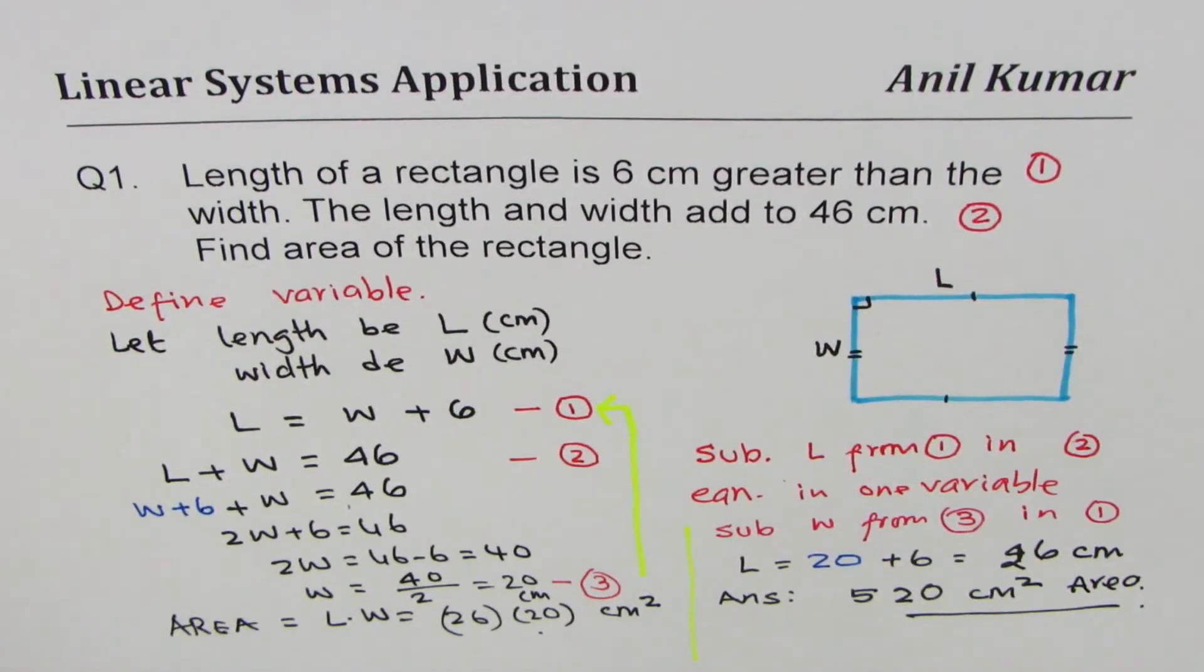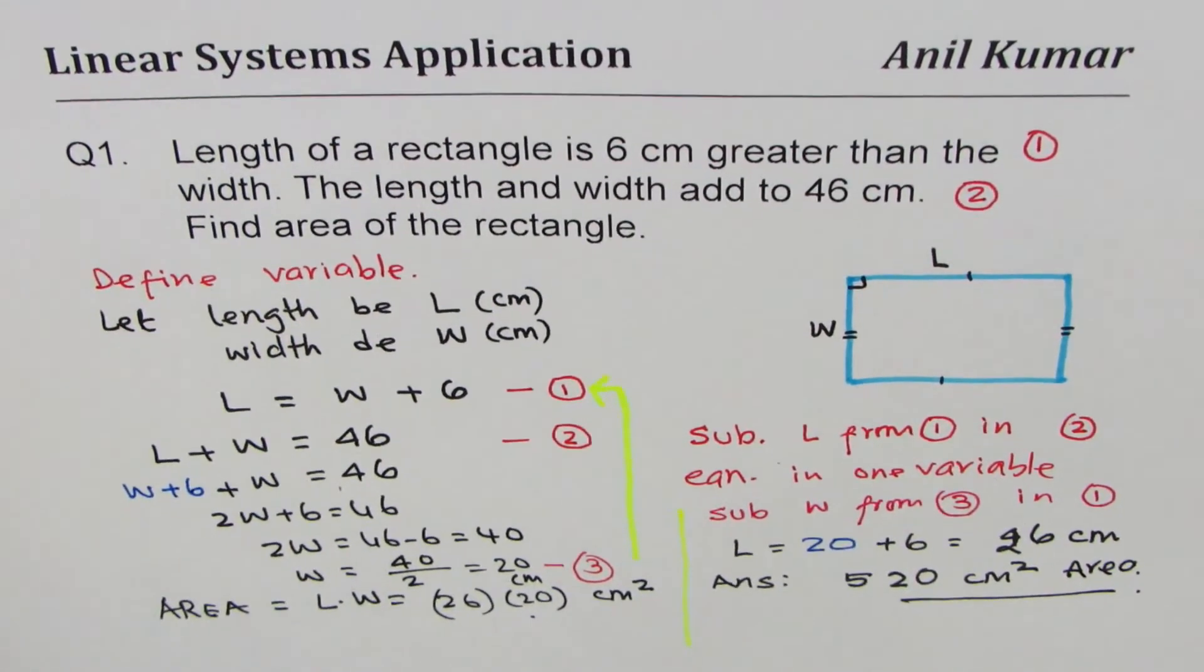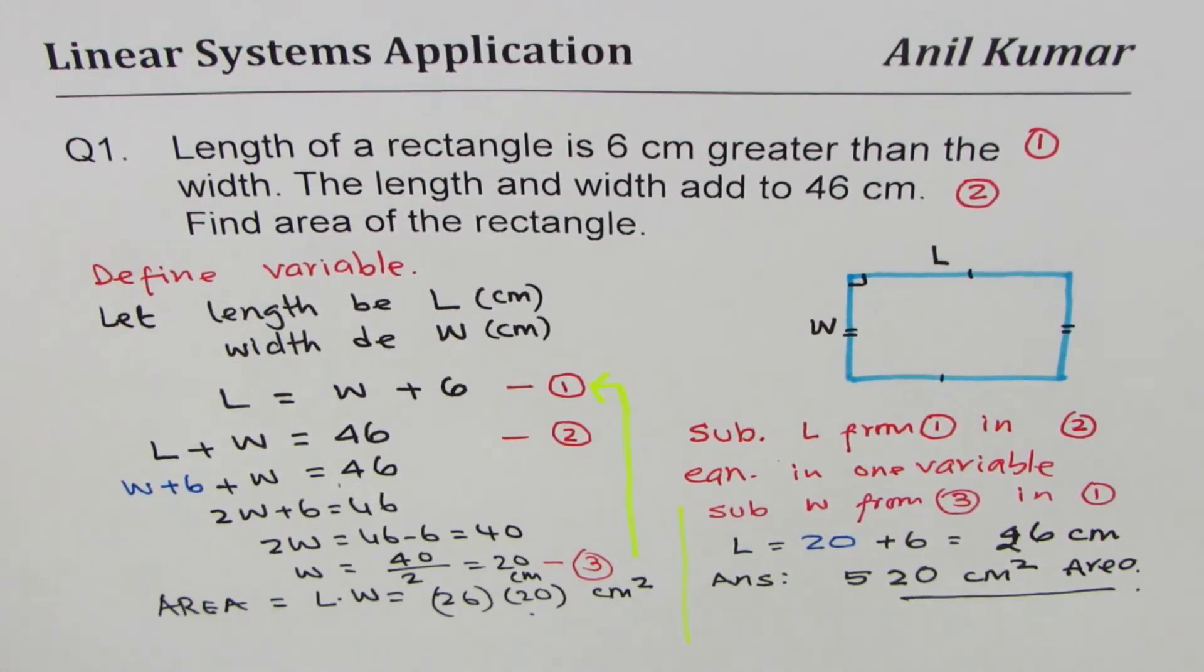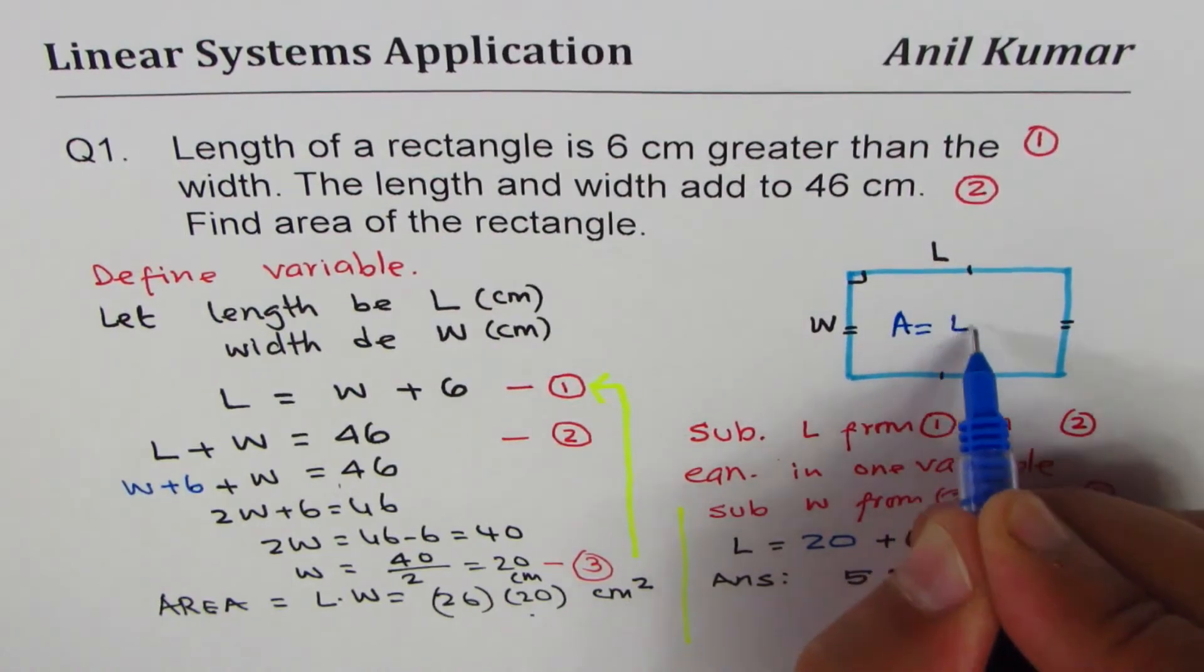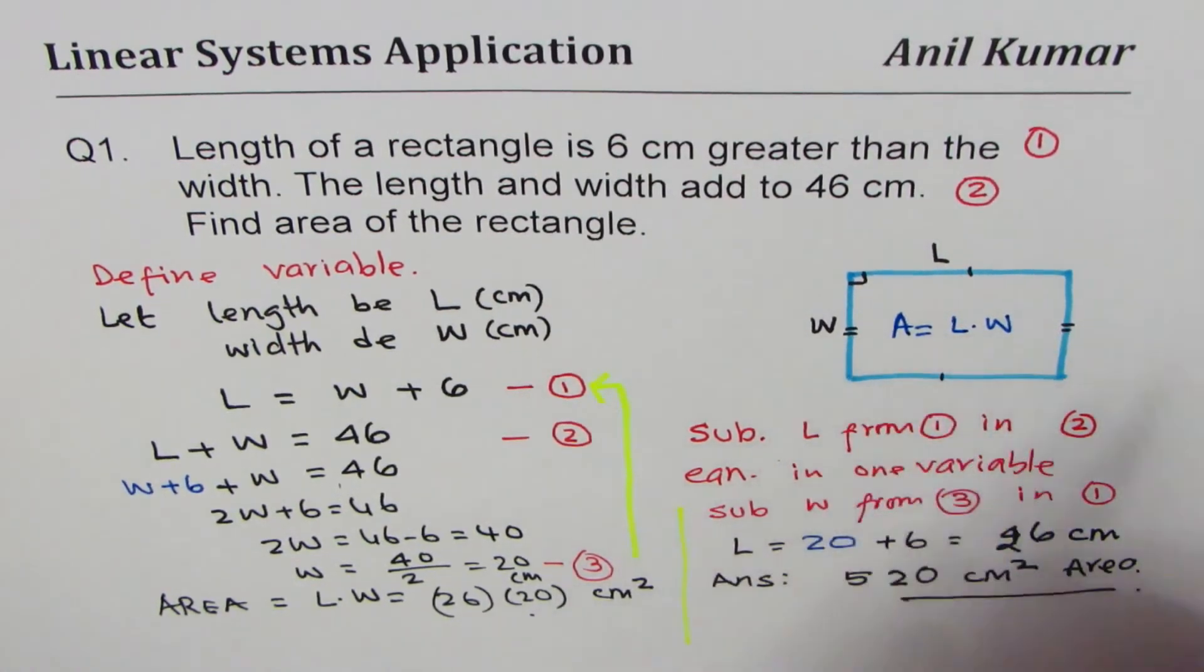That is the area. We get the area by multiplying length and width. You have understood how to find a solution to such questions. We could have written here area is length times width, and then finally we found this area as 520.